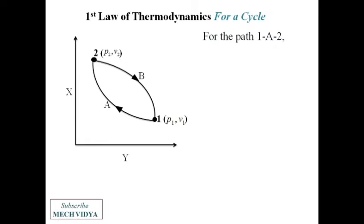So for the path 1a2, by applying the first law of thermodynamics, I can write q_a = w_a + Δu_a. Rearranging this equation we get q_a - w_a = Δu_a. Let this be equation 1.